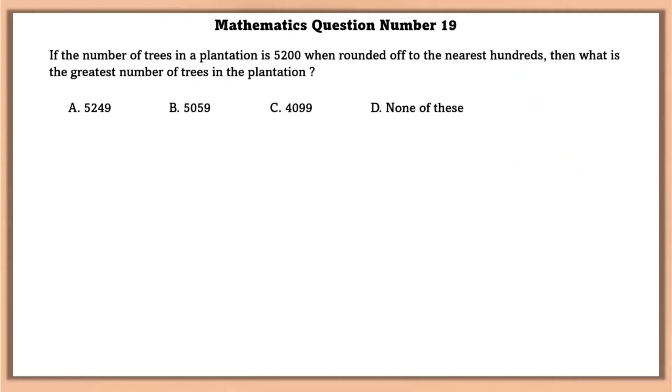Mathematics question number 19. If the number of trees in a plantation is 5200 when rounded off to the nearest 100, then what is the greatest number of trees in the plantation? The greatest number of trees in the plantation is equal to 5249.